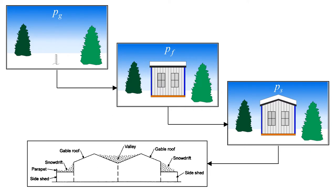The images on this slide reinforce the process. We start with the ground snow load, P sub G — P for pressure, G for ground. From that, we determine the flat roof snow load, P sub F. Then we determine the sloped roof snow load, P sub S. After that, we look at more particulars about the roof: places where snow is going to slide, drift, or accumulate in a valley.